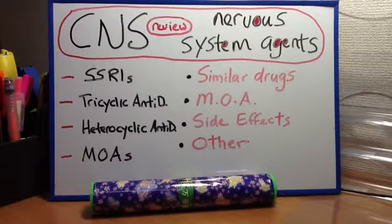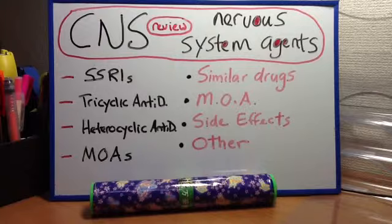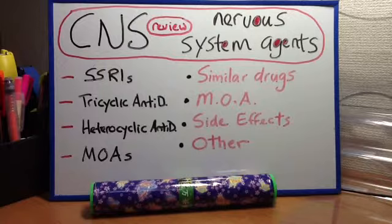Similar drugs include fluoxetine, paroxetine, sertraline, etc. Mechanism of action: prevent the reuptake of serotonin from the synaptic cleft. This potentiates the effects of serotonin on the post-synaptic receptors.